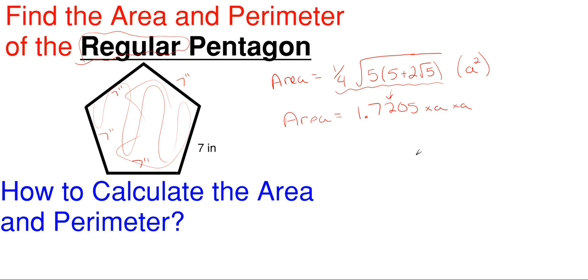So the area calculation, we're just going to plug in seven inches for a here. So it's 1.7205 times seven inches times seven inches and this gives us a total area of 84.30 inches squared.